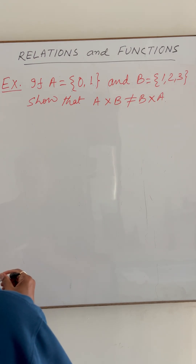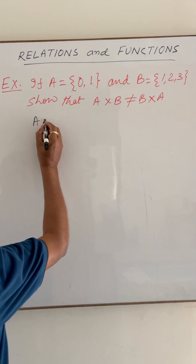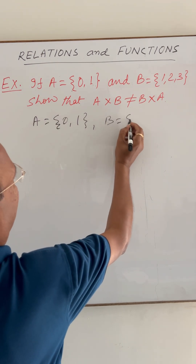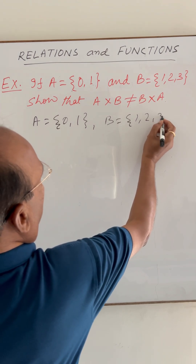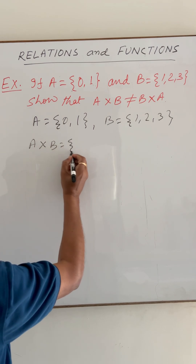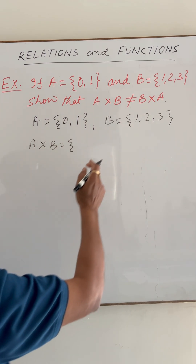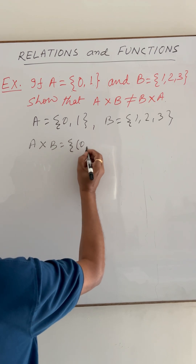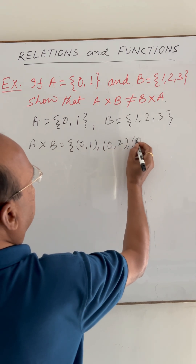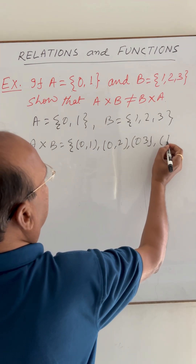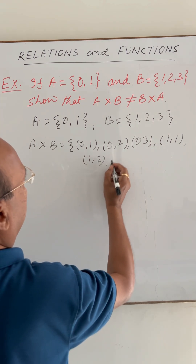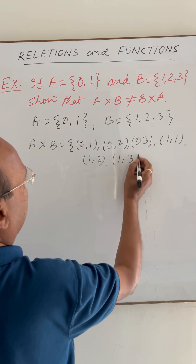So let us see the solution. Set A has elements 0, 1 and set B has elements 1, 2, 3. So A cross B will have 2 into 3, that is 6 ordered pairs. These are: (0,1), (0,2), (0,3), (1,1), (1,2), and (1,3).